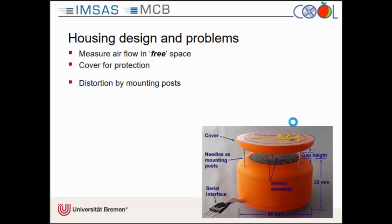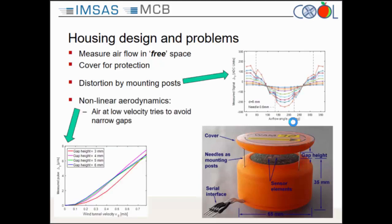First of all, we need a cover for mechanical protection. Our sensor is microfabricated and has a very thin membrane, so we need the cover. We also have to fix the cover with some mounting posts or needles, as you can see in the picture — you can also see our sensor elements in the middle. As you can imagine, if the airflow directly hits one of these needles, the airflow gets distorted. If we do a full rotation of the housing and record the signal for different airflow magnitudes, you can see distortions or dents at the positions of the needles, which makes the signal processing much more difficult.